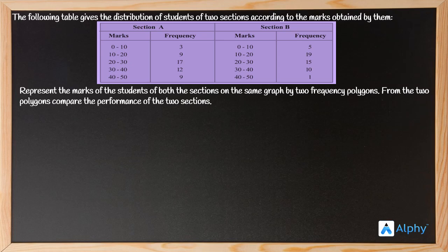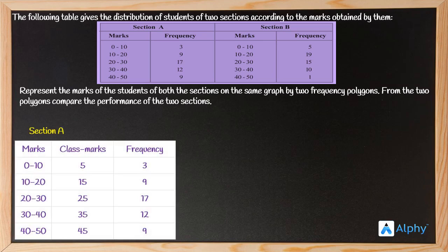For section A, we have prepared a table which consists of class marks. As you may remember, the class mark is nothing but upper limit plus lower limit divided by 2 of the class intervals. We have taken the marks and frequency column as given in the question. For example, for the class interval 0 to 10, the class mark equals 0 plus 10 divided by 2, which is 5.